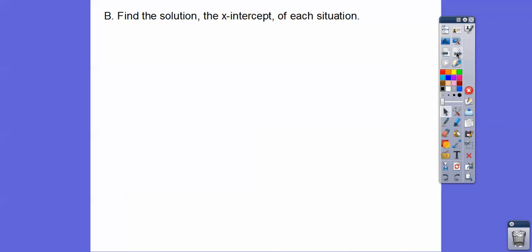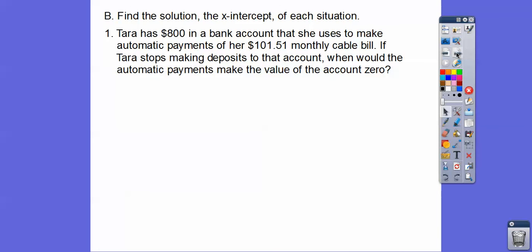So find the solution, the x-intercept of each situation. We did this problem also. Tara had $800 in her bank account that she used to make automatic payments of her $101.51 monthly cable bill. If Tara stops making deposits into that account, when would the automatic payments make the value of that account zero?